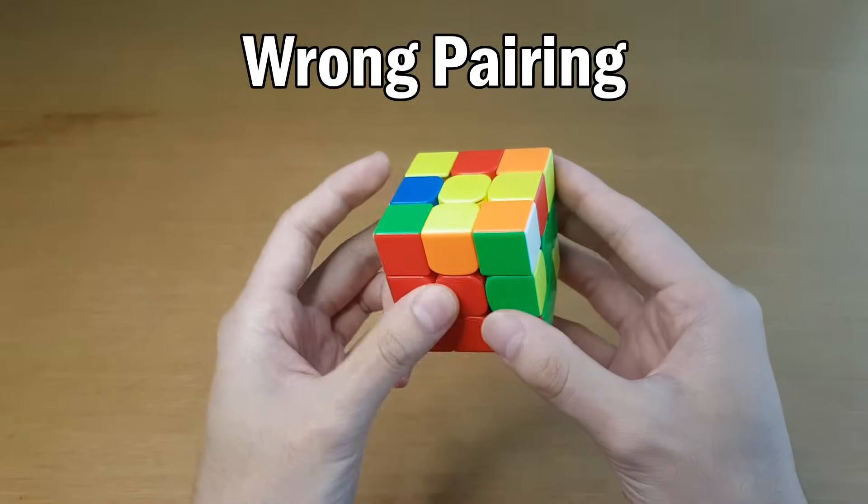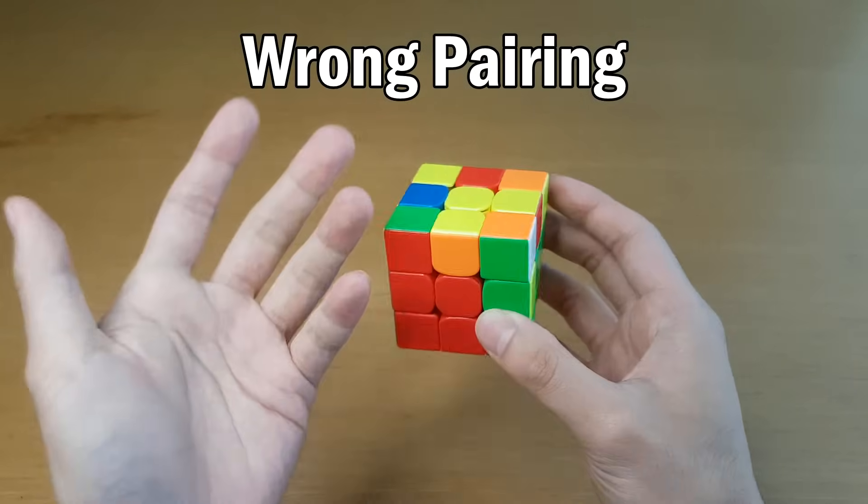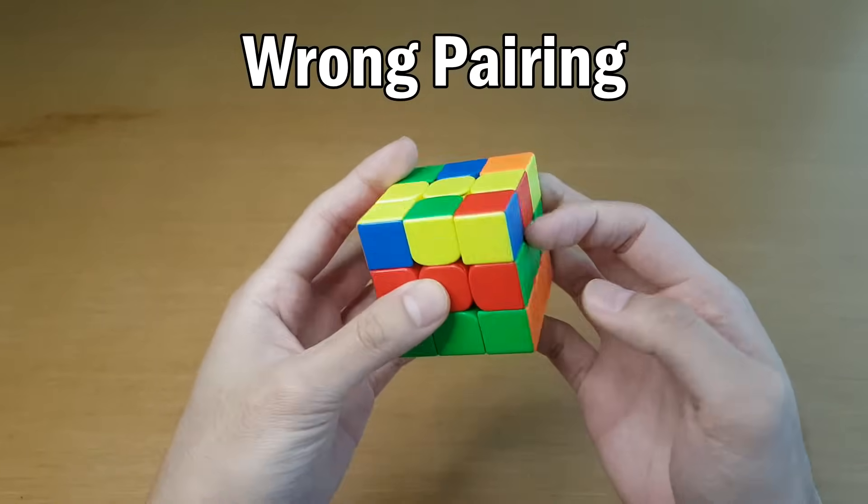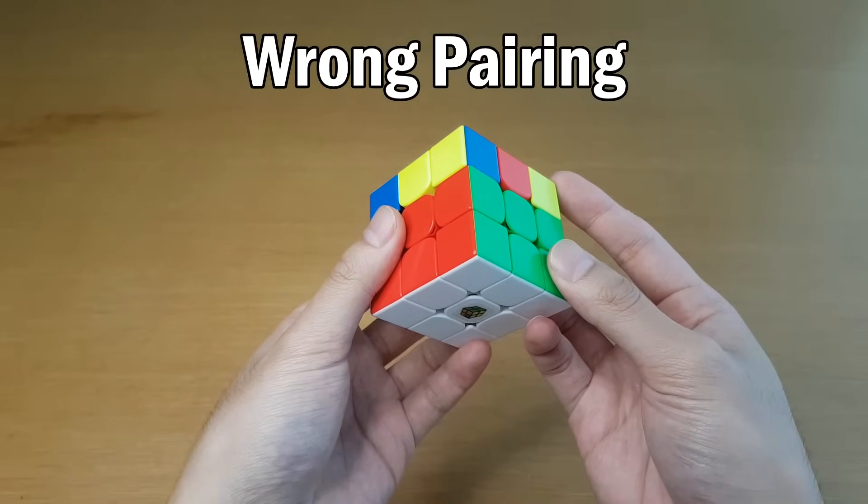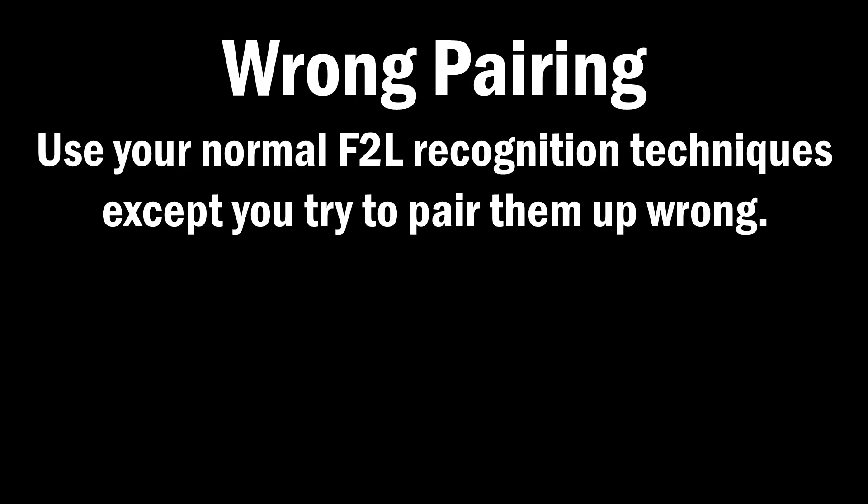So instead, what you're going to do is have the split-up case, like that, and when you set it up this way, you have this green not matching the top, instead it matches the back. Usually that's wrong, but in this case, for pseudo-slotting, that is actually correct.